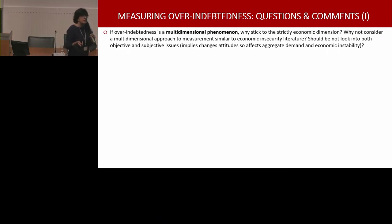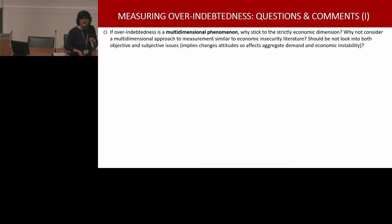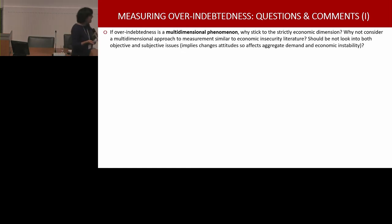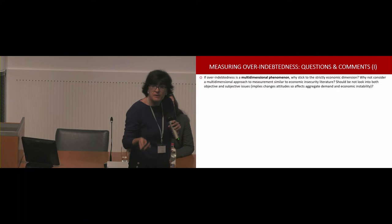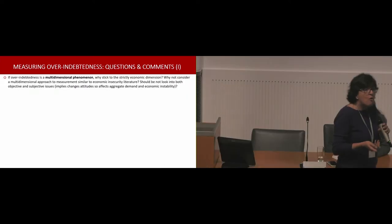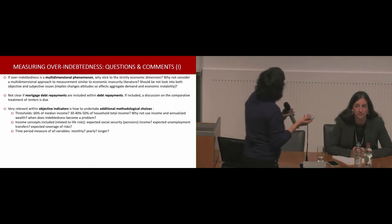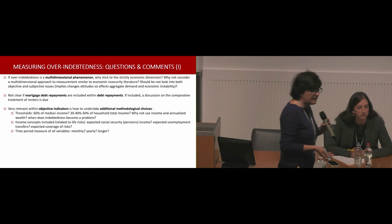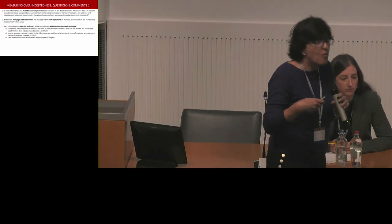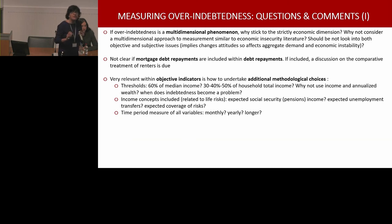Subjective issues are relevant, and there's a very large growing analysis of economic insecurity in recent times that is actually identifying households in low middle classes that have a very high level of economic insecurity, who are not poor — they are in the middle classes. So I think you should go more in that direction. The discussion of additional methodological choices, such as why the 60% median income threshold — I'm not really sure that is the threshold you should use to measure what you want to measure. Also, maybe including other income concepts would be necessary if we want to really measure what's going to happen in the future.